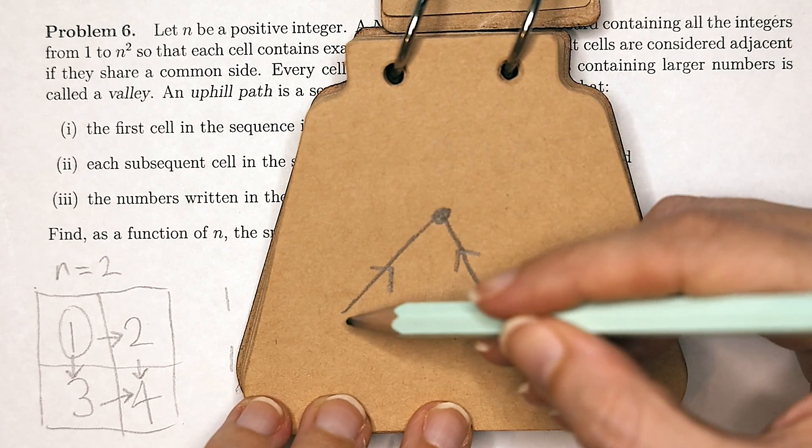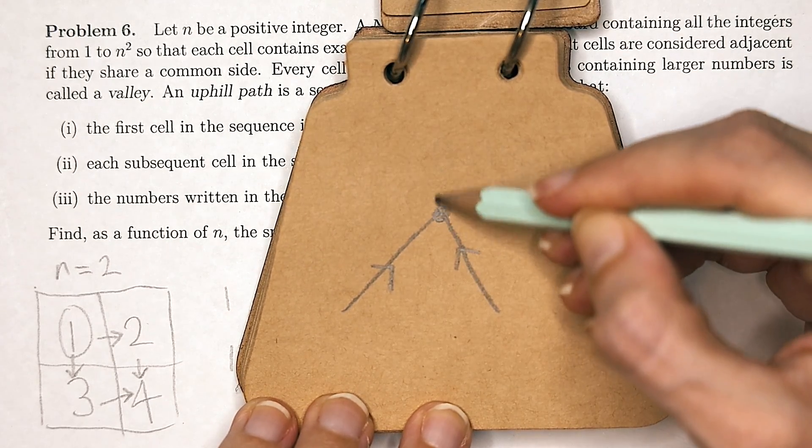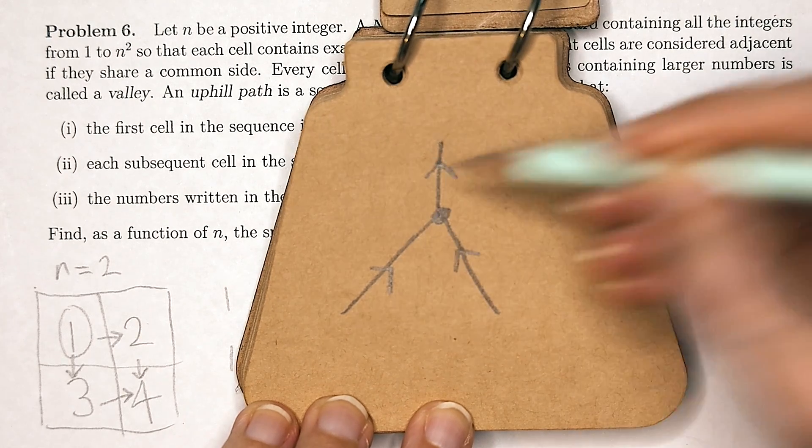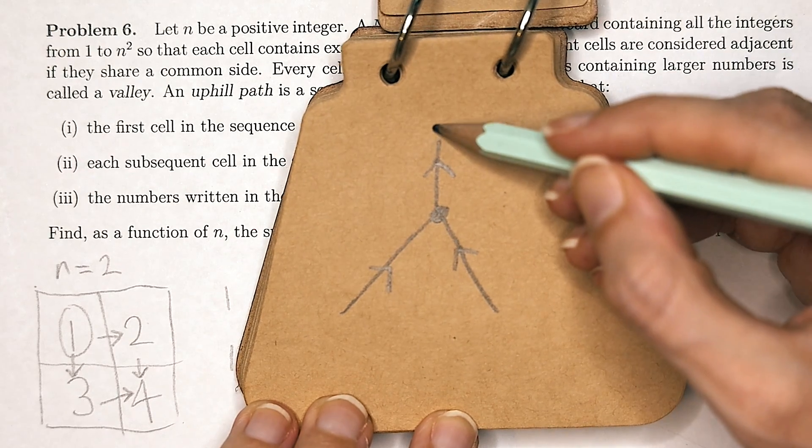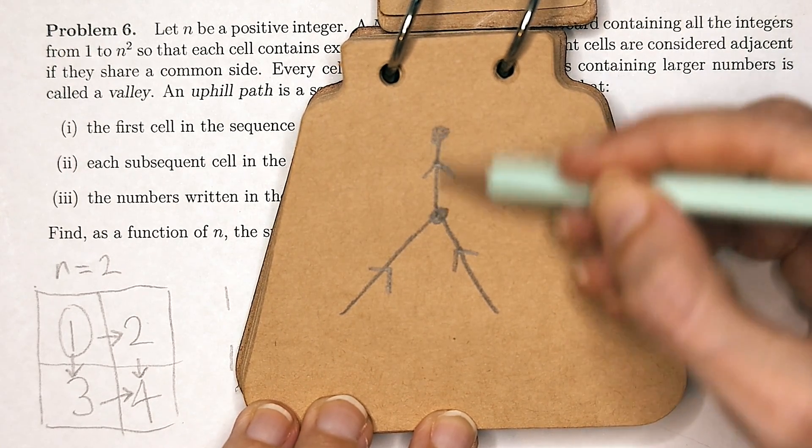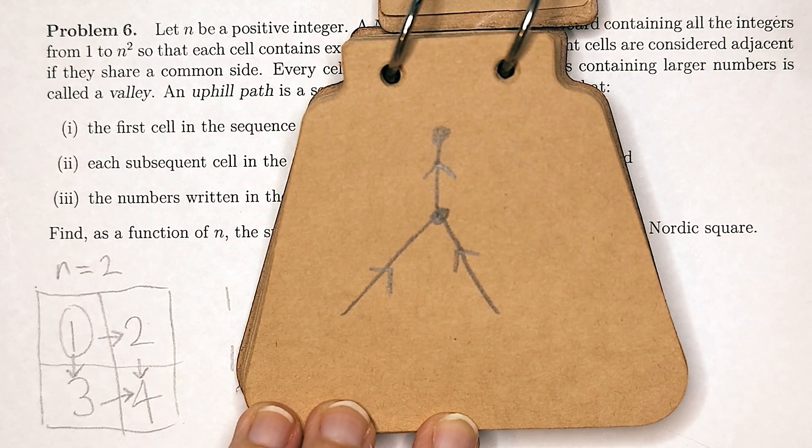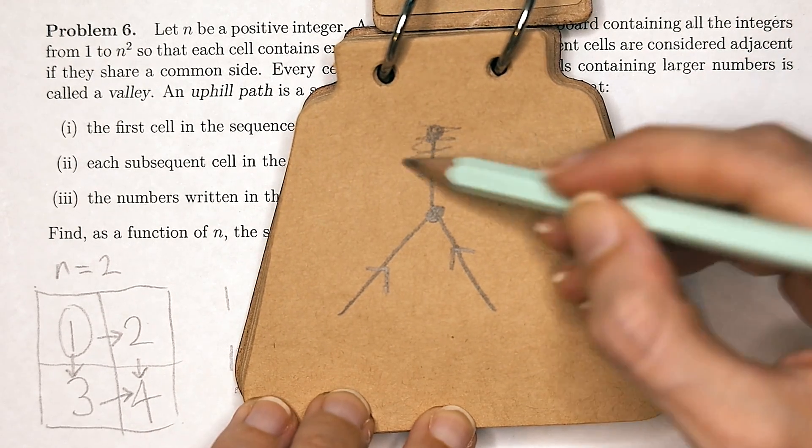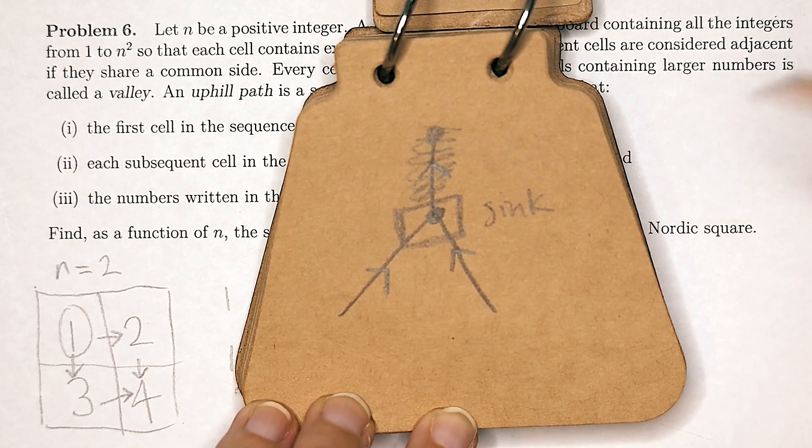This essentially means you can have two paths coming to a common endpoint, but you can never have two paths converging and then continuing on, because that would mean that from wherever this ends, these two adjacent numbers will have multiple paths back down to the valley. So this is not allowed, and we can call something like this endpoint a sink.